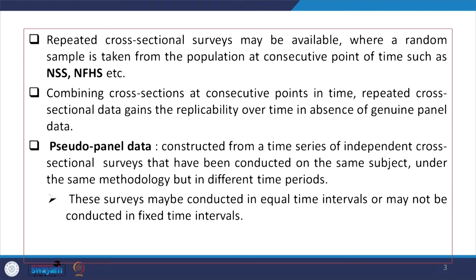Repeated cross-sectional surveys may be available where a random sample is taken from the population at consecutive points in time, such as NHS or NFHS datasets. Combining cross-sections at consecutive points in time, repeated cross-sectional data gains replicability over time. Even in the absence of genuine panel data, if repeated studies are conducted in different time periods, a pseudo-panel can be constructed.